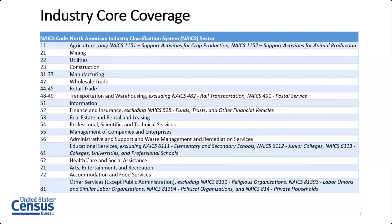This slide shows the coverage of the NAICS sectors. We cover all of the NAICS sectors except sector 11, which is agriculture. This sector is covered by the Census of Agriculture, which the USDA collects. For the 2022 Economic Census, we will be covering two industries within sector 11, although that does not apply to Puerto Rico or the other island areas.